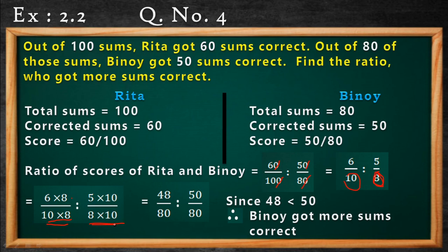Now just multiply them: 6 into 8 is 48 and 5 into 10 is 50. Since the denominators are equal, you can simply compare the numerators. Since 48 is less than 50, Benoy's score of 50 is greater. So out of 80, Rita got 48 and out of 80, Benoy got 50. That means Benoy got more sums correct.